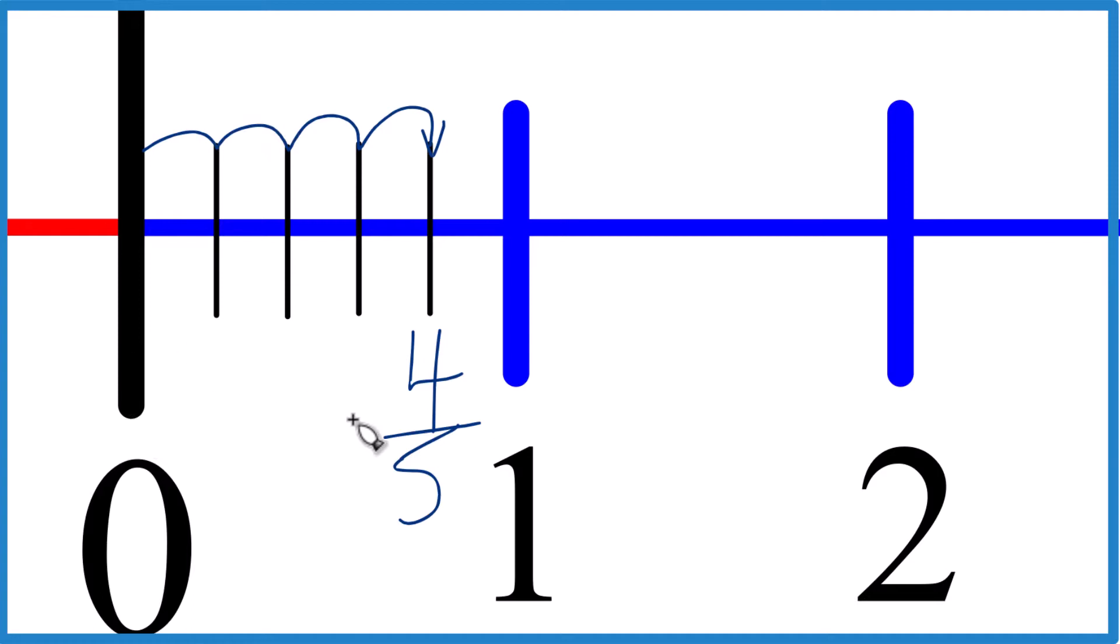So that's how you find four-fifths on the number line. This is Dr. B. Thanks for watchin'.